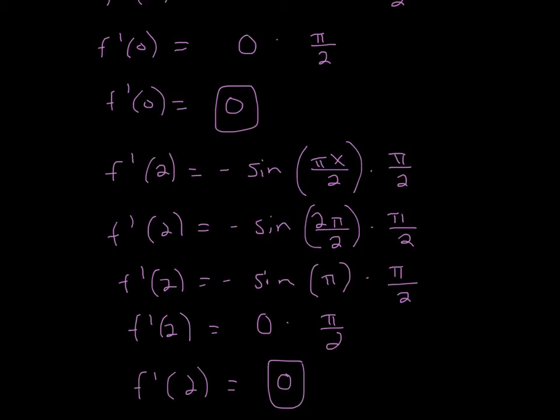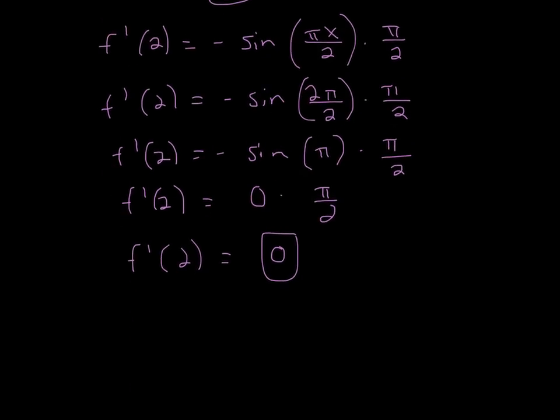So what is sine pi? Well, you're going to use that unit circle again. On the unit circle, sine of pi will actually be 0. So once again, anything multiplied by 0 will just be 0.